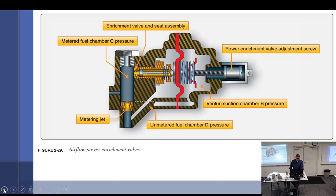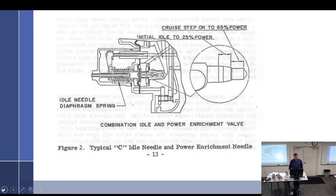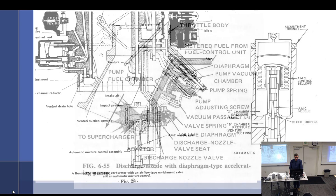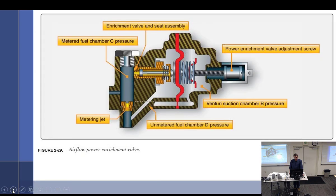Does it shoot fuel out when we shut down? It would have to — there's only two parts: vacuum and a spring. But when we lose vacuum on shutdown, the discharge nozzle needle valve also closes, so even if the accelerating pump fires, the needle valve has already shut. That's just another representation of the needle we're talking about.